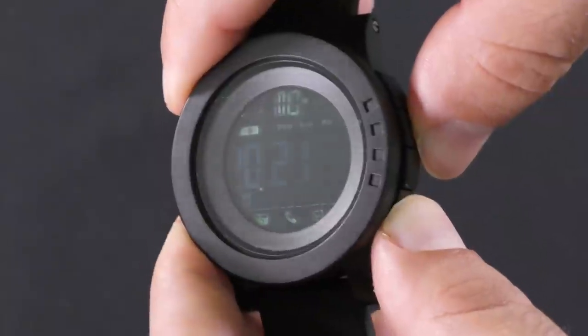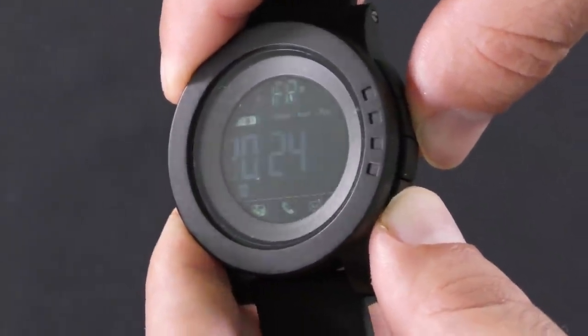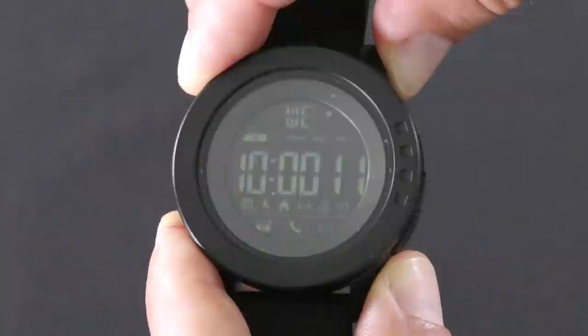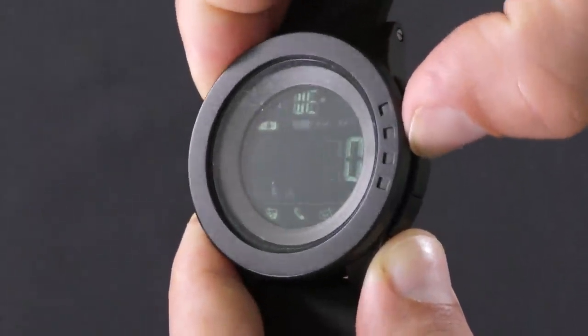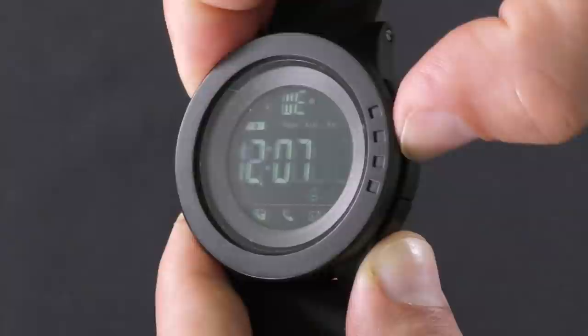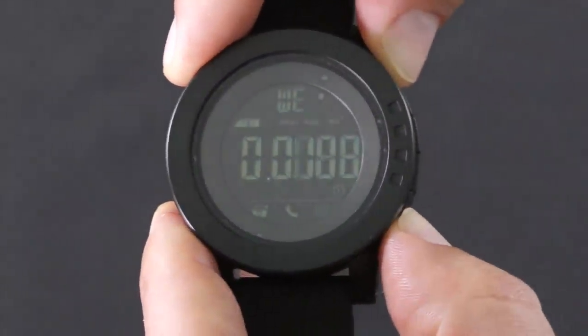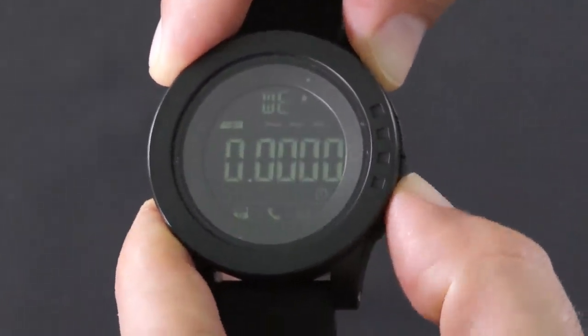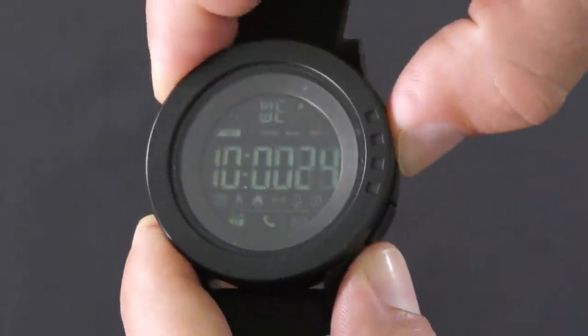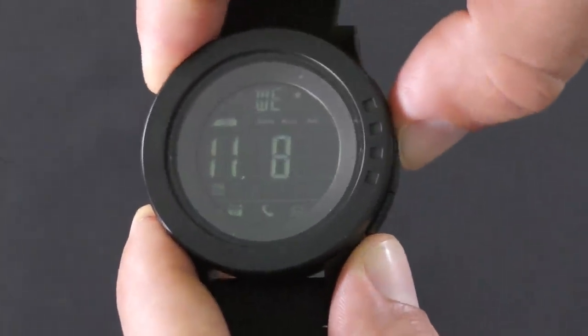To get into stopwatch mode, press button number three six times. To start and stop the stopwatch, press button number one. To reset it, press button number two. You can also enable split count, which I will leave to you to figure out how to handle. You can navigate between the different modes while the stopwatch runs in the background.